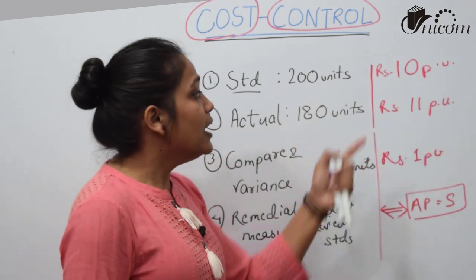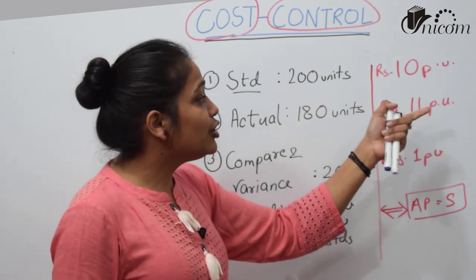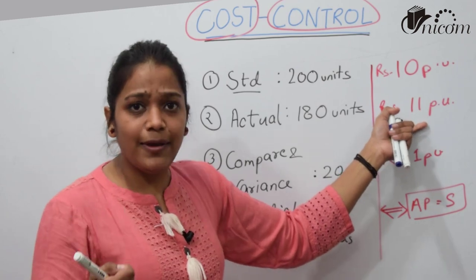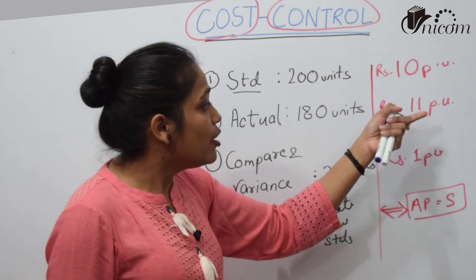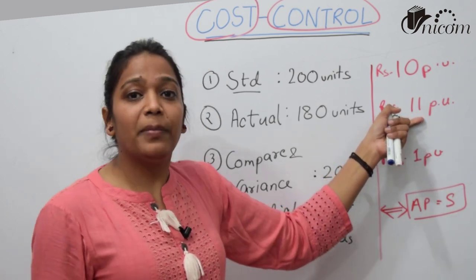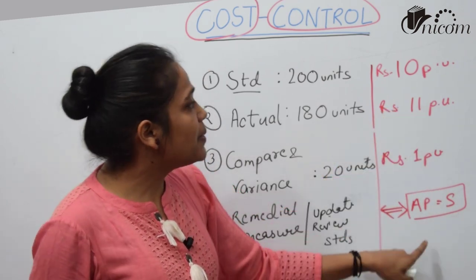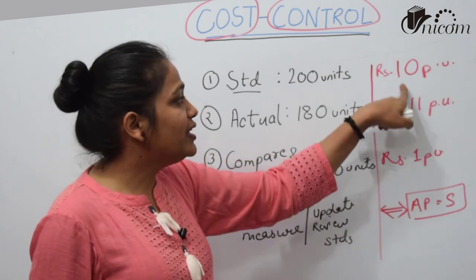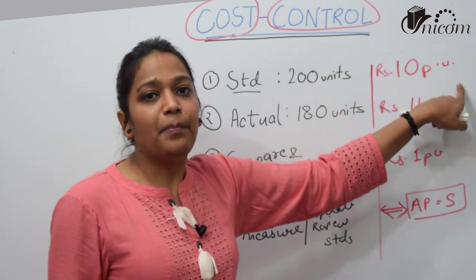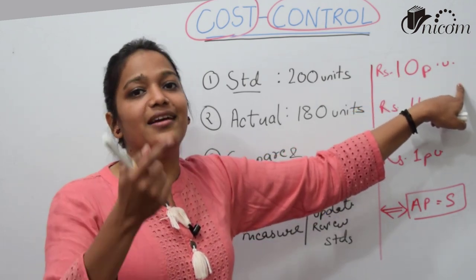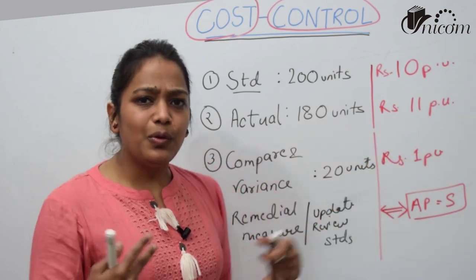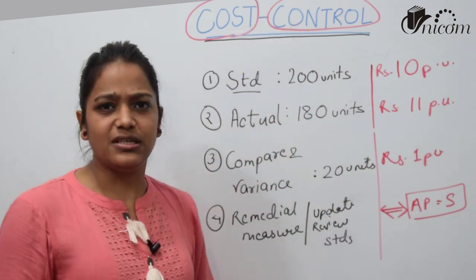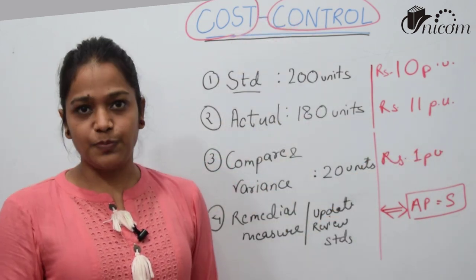It is also possible that if you find there is nothing you can do — the cost is genuinely 11 rupees per unit — then you can raise your standards from 10 to 11 rupees. So cost control is particularly a continuous process.